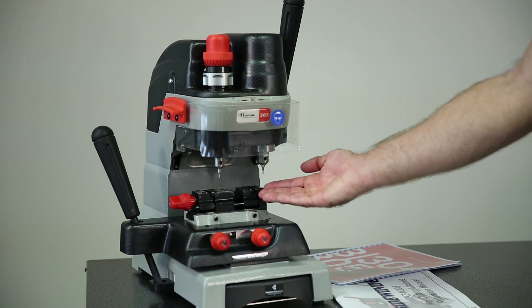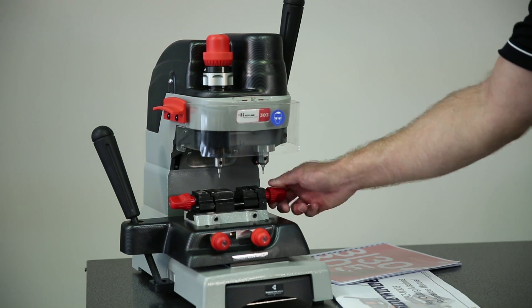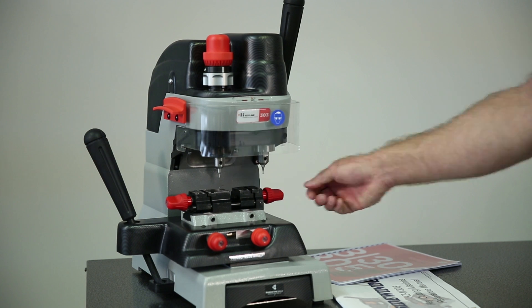The jaws are located in the center of the table. Keys are inserted into the jaws and the knobs on the right side and left side of the jaws tighten and hold the keys in place during cutting.